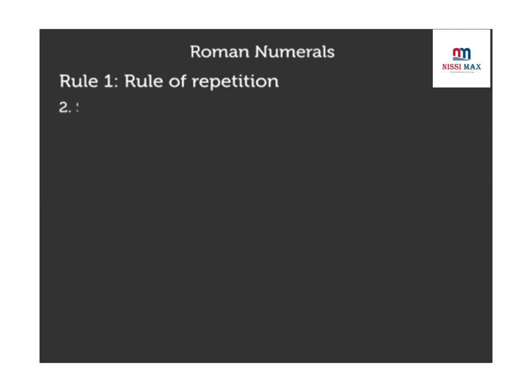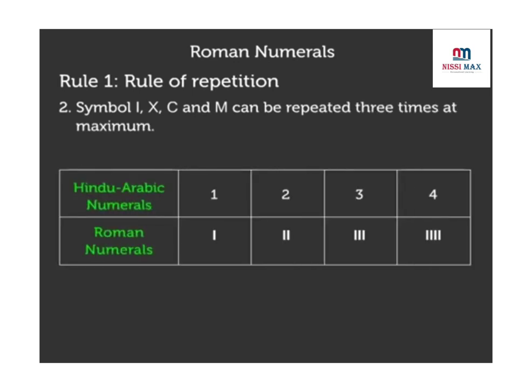Symbols I, X, C, and M can be repeated three times at maximum. For example, we can write 1 as I, 2 as II, and 3 as III in the Roman system, but we cannot write 4 as IIII.